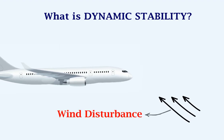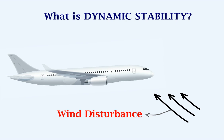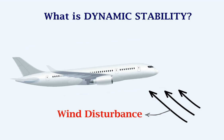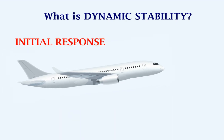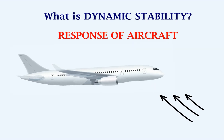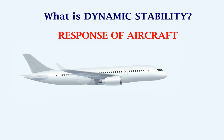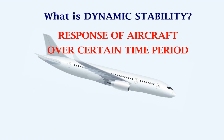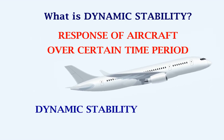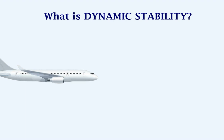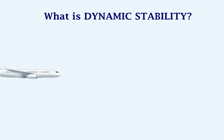After a disturbance on an aircraft, the aircraft's attitude changes. The initial response of the aircraft is called static stability. The response of an aircraft over a certain time period is called dynamic stability. Let's see what this means in more detail.